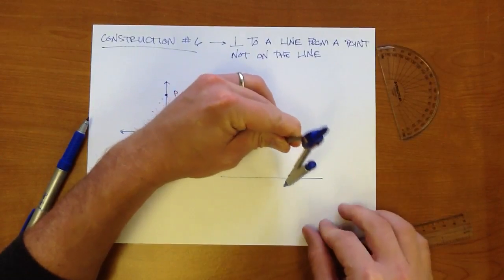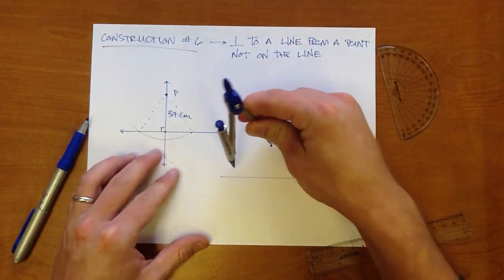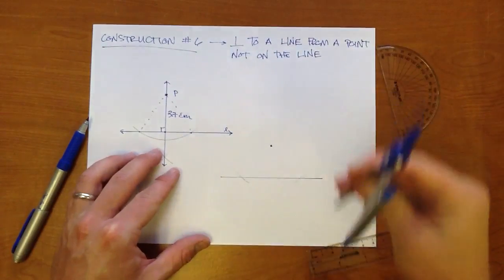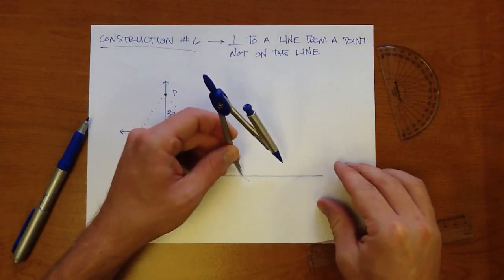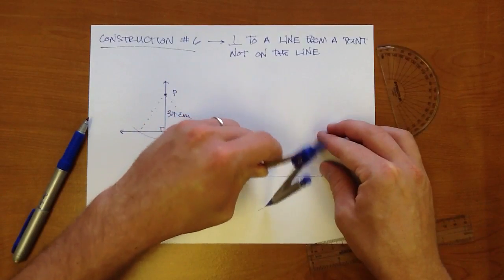We have a segment that's a little bit longer than the distance from the point to the line. Strike arcs making two intersection points. Now make sure your compass is over halfway. Make an arc below.